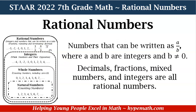Let's review rational numbers. Rational numbers can be written as a over b, or as a fraction, where a and b are integers and b does not equal zero. There can be decimals, fractions, mixed numbers, and integers — those are all rational numbers.